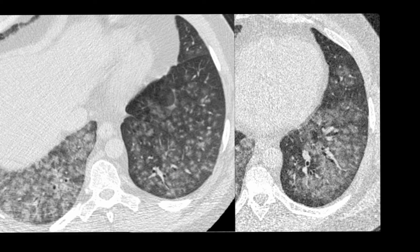Later on, these ground glass nodules in the central lobular portions of the secondary pulmonary lobules progress to form a diffuse conglomerate of ground glass attenuation.